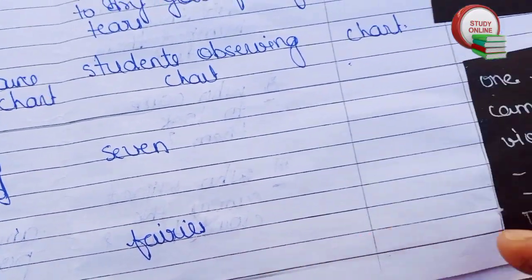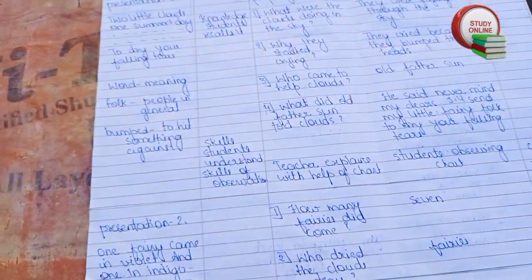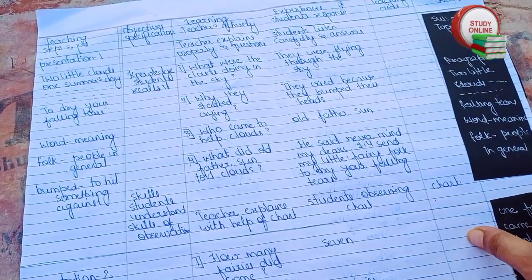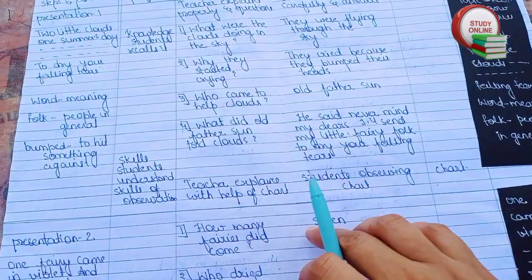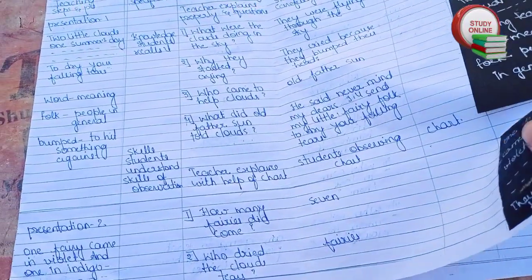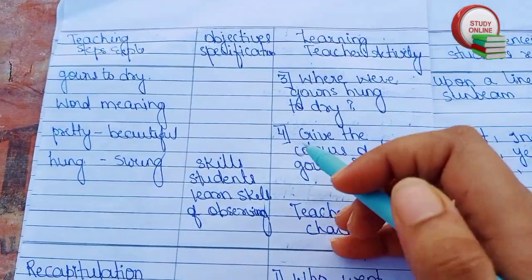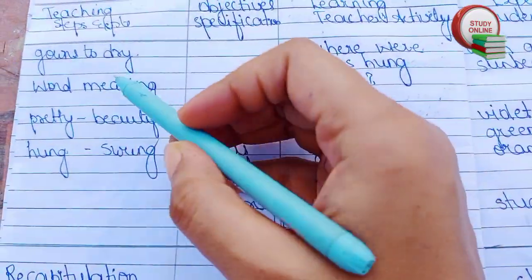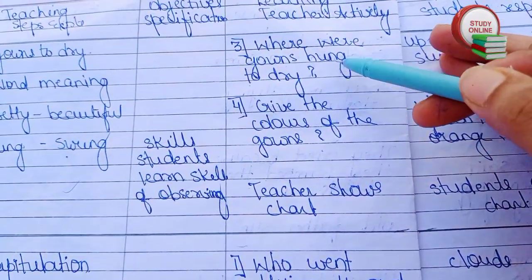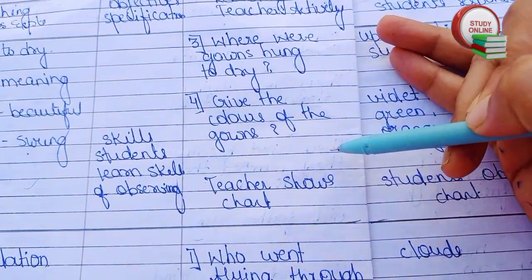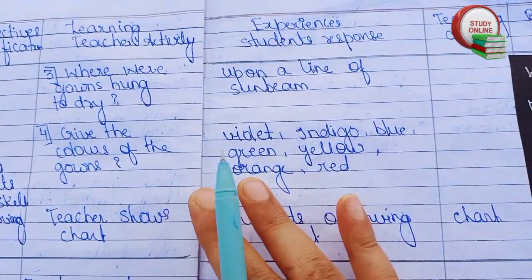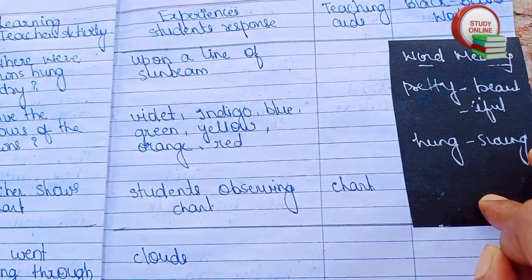Now let's see the rest of Presentation 2. Here you can see word meanings I've written, along with the remaining questions — question number three and question number four — and the answers we expect from students. Word meanings are also included here.